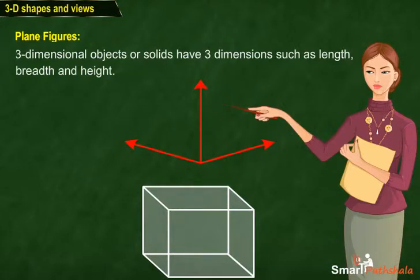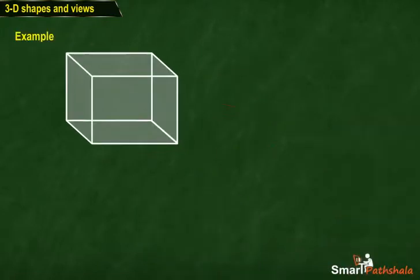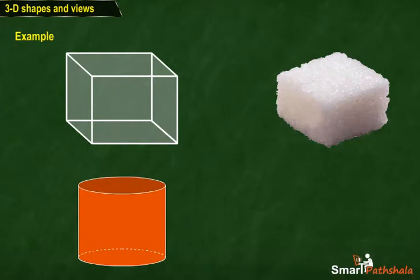Three-dimensional objects look different from different locations or angles. Examples include cube, cuboids, cylinder and cone.